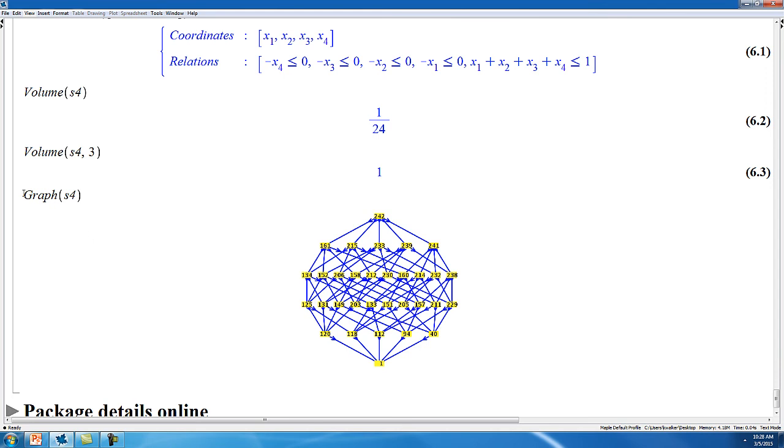And we can compute the graph of a four-dimensional set, and we can see that this graph has more layers than the three-dimensional set of the tetrahedron that we studied above.